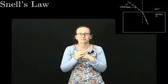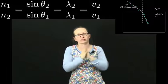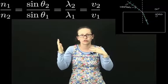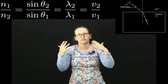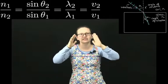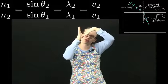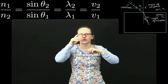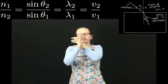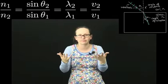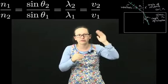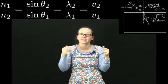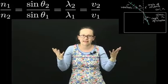We have a very useful quantitative equation that describes the relationship between all these properties. It's called Snell's Law, and can be written as N₁ on N₂ — that's referring to the refractive indices — is equal to sine θ₂ on sine θ₁, where θ₁ and θ₂ refer to the angle of incidence and the angle of refraction. The angle of incidence θ₁ is measured as the angle between the normal to the surface and the light ray. N₁ on N₂ also equals λ₂ on λ₁, where λ is the wavelength, and that equals V₂ on V₁, where V stands for velocity.